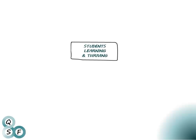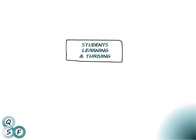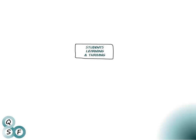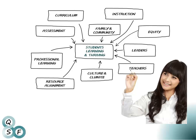On the QSF website, all students are at the center of all discussions about quality schooling. To support all students, the QSF recommends that 10 elements be addressed in an integrated way. These elements include curriculum, instruction, assessment, equity, teachers, family and community engagement, leaders, professional learning, culture and climate, and resource alignment.